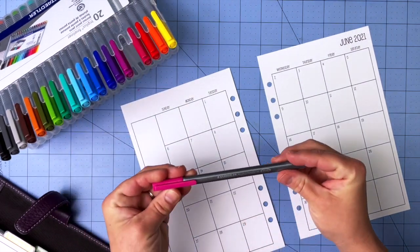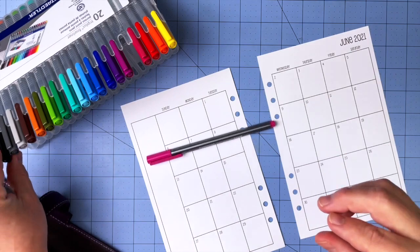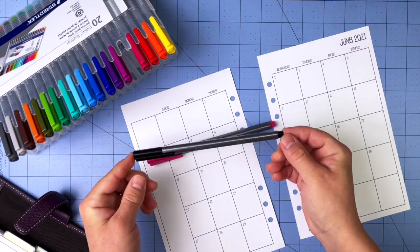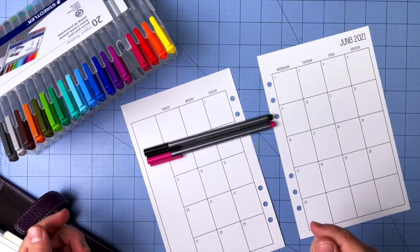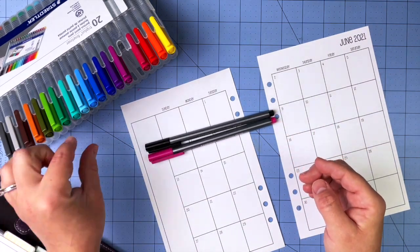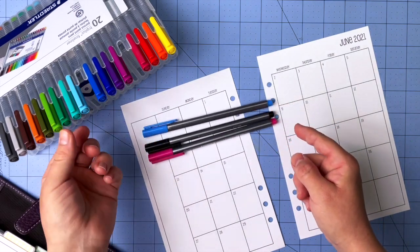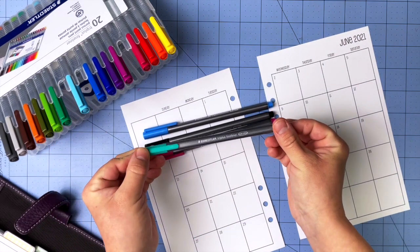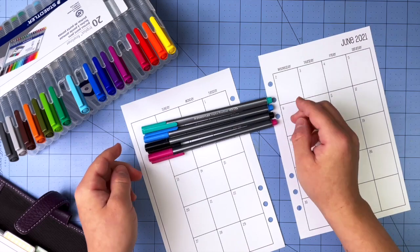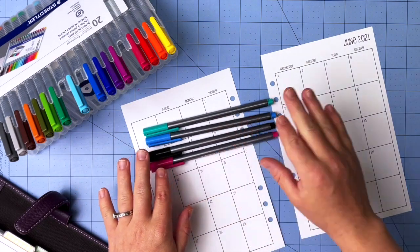So I'm going to pull out the pens that I use. This pink is for business-related things. Black is for federal holidays, or I guess Father's Day this month. Let's see, I'm going to use this blue color for church events. I use this teal for family, something that affects like the whole family.